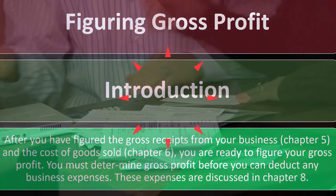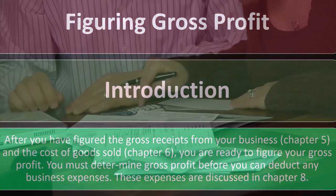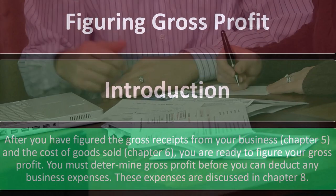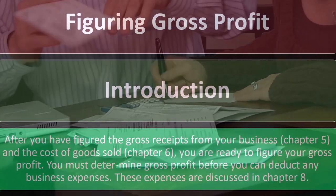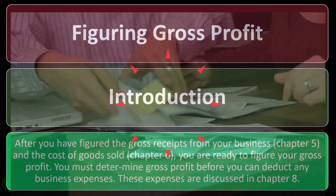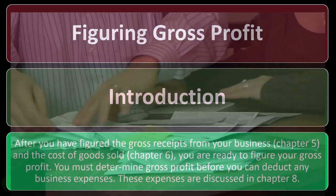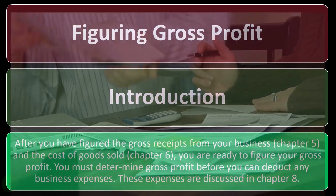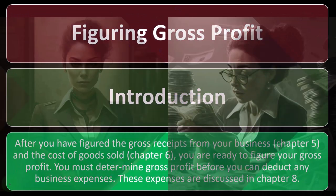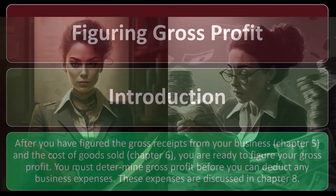After you have figured the gross receipts from your business — covered in chapter five — and the cost of goods sold — chapter six — you are ready to figure your gross profit. It's not 'gross' in a bad sense, so don't be scared of it. You must determine the gross profit before you can deduct any business expenses, so the business expenses come after this step. Those expenses are discussed in chapter eight.